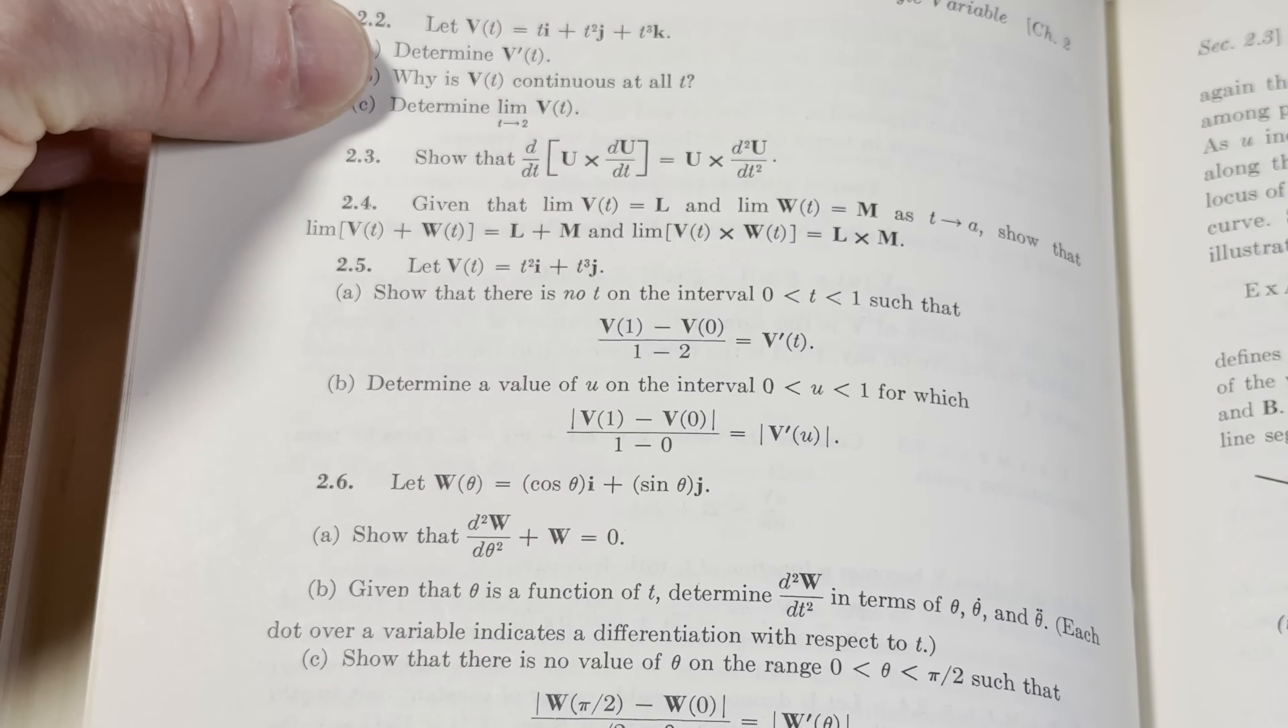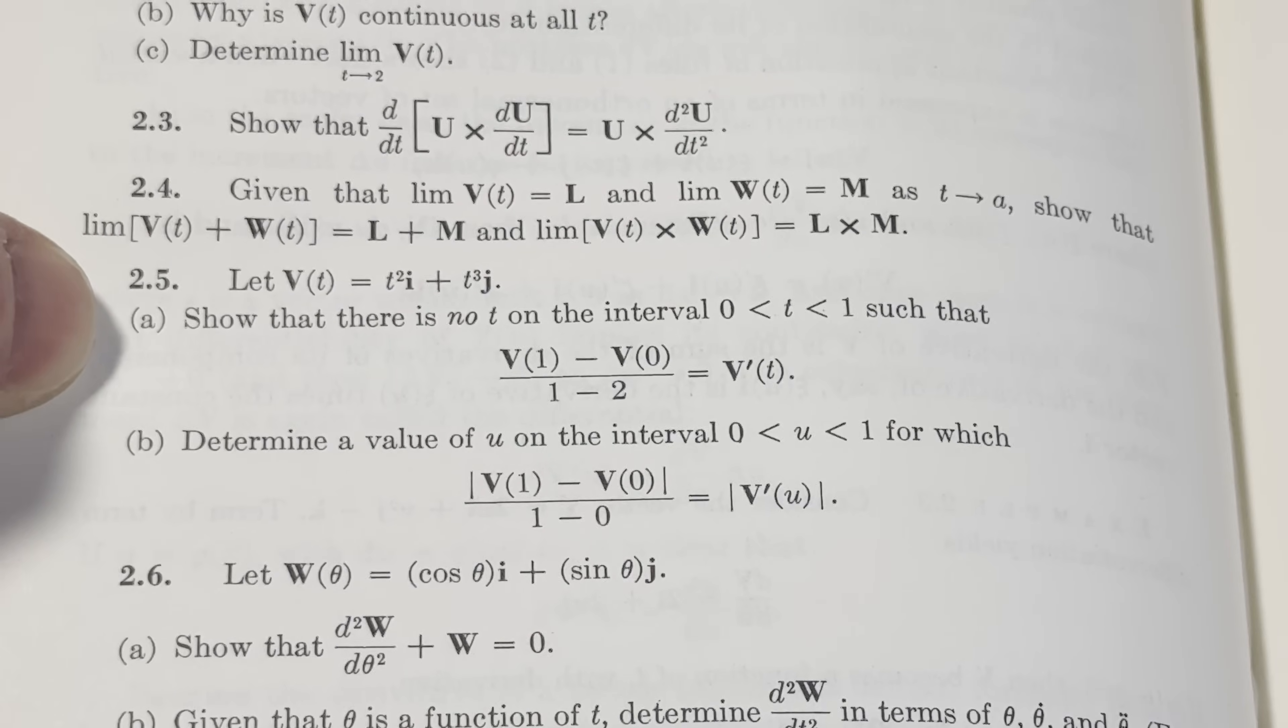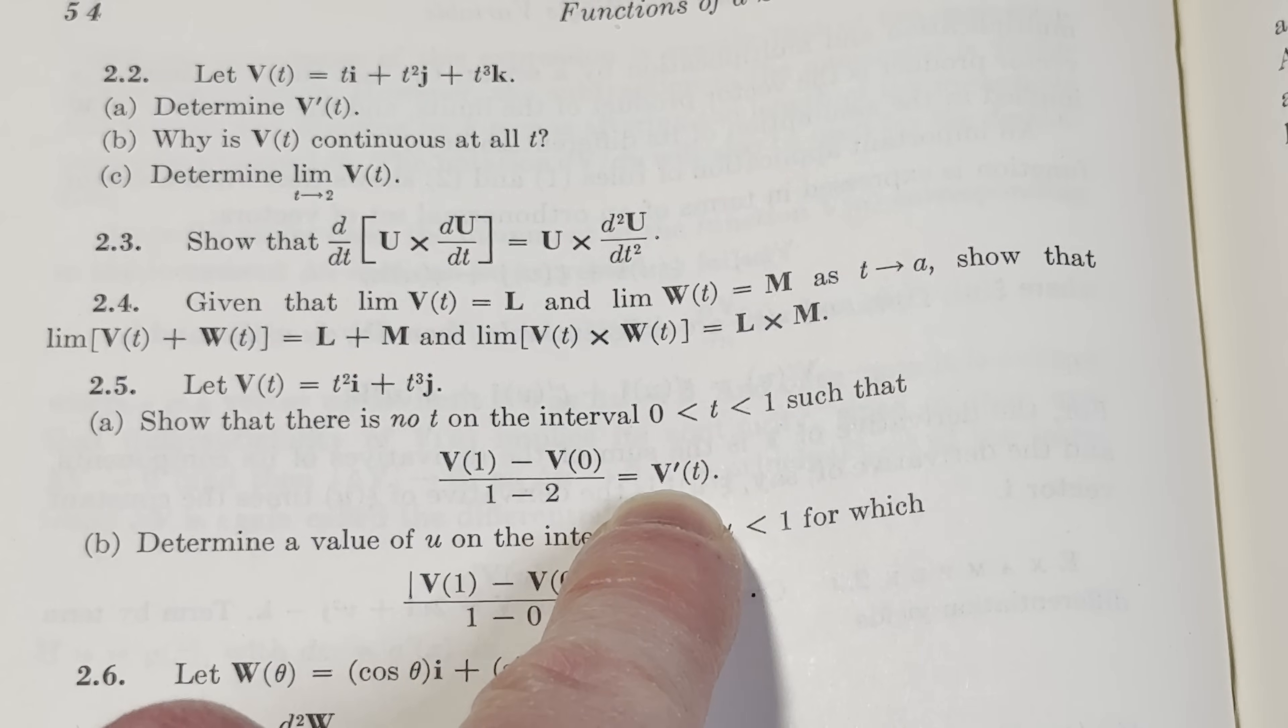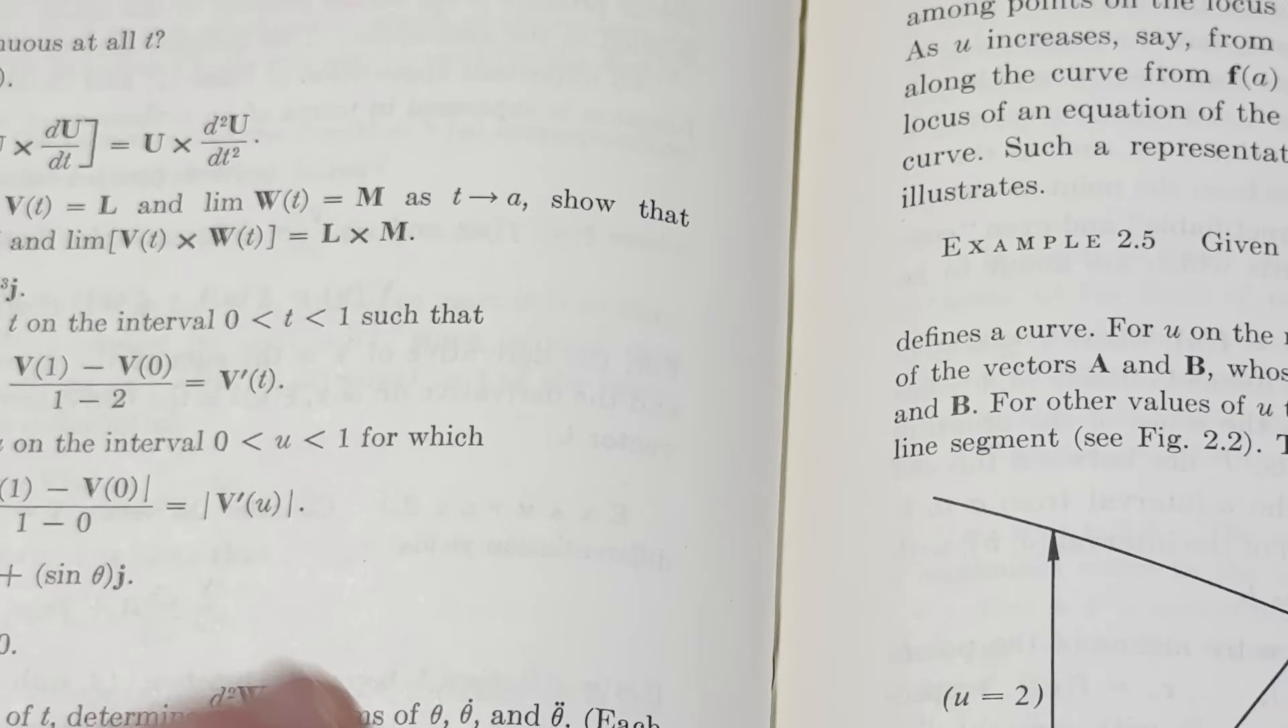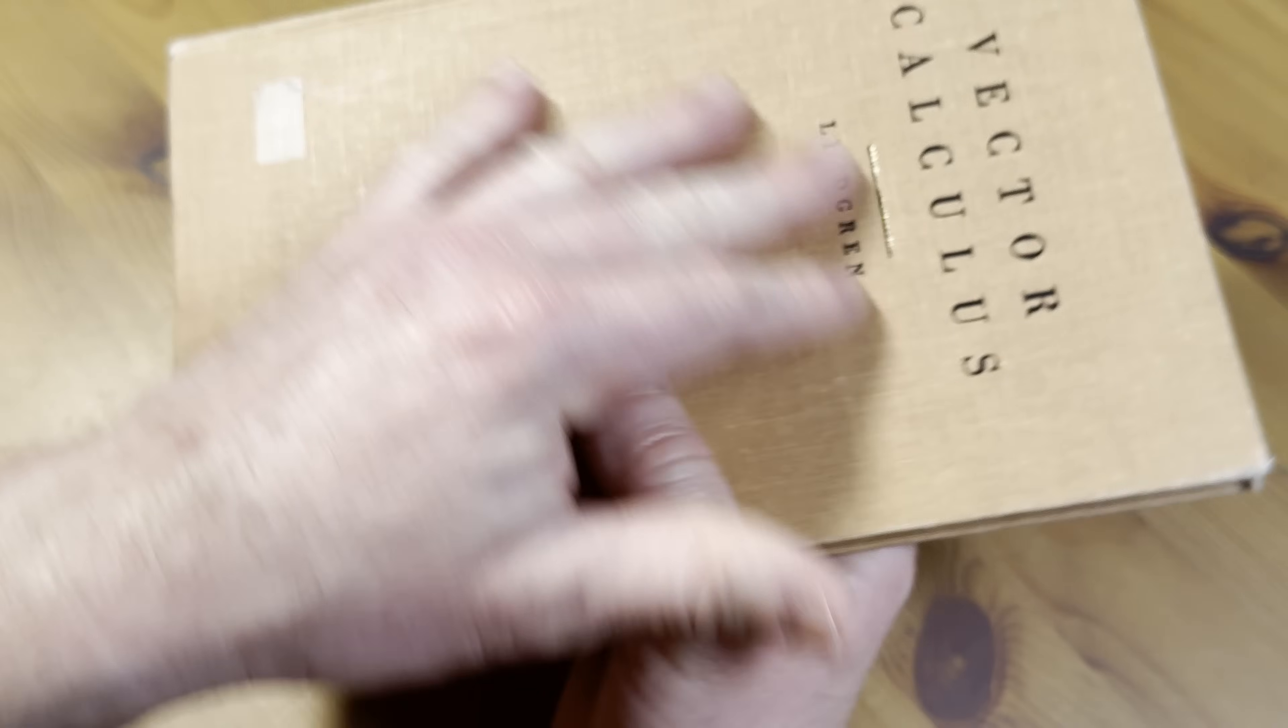Some cool problems here, you see varying levels of difficulty. Look at this one at 2.5: Show that there is no t on the interval between 0 and 1 such that that's true, and determine a value of u on the interval for which that's true. So you can spend an incredible amount of time with this book even though it's really thin. I want to emphasize that.